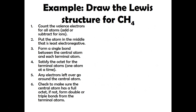We're going to draw the Lewis structure for CH4. The first step is to count the valence electrons. Carbon is in group 14, therefore it has four valence electrons. Hydrogen is in group one and has one valence electron, but there are four hydrogen atoms, so we multiply by four. Four plus four gives a total of eight valence electrons.